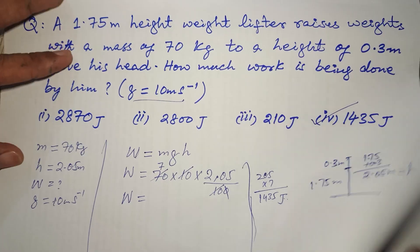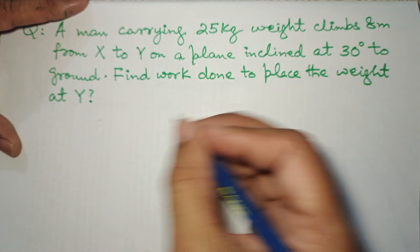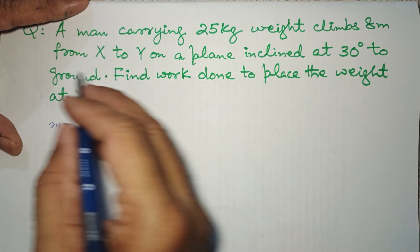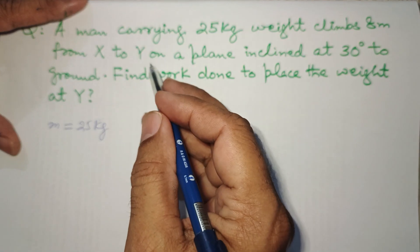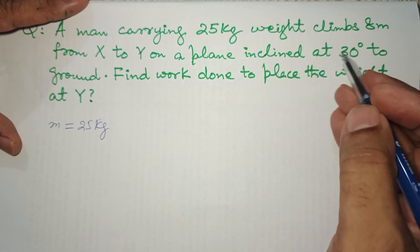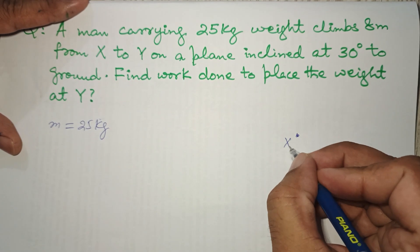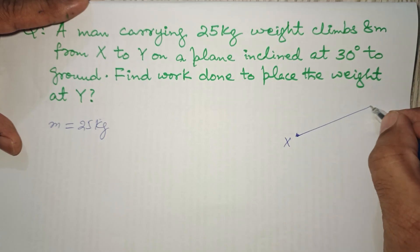Move to the next one. A man carrying 25 kg weight climbs 8 meters from X to Y on a plane inclined at 30 degrees.